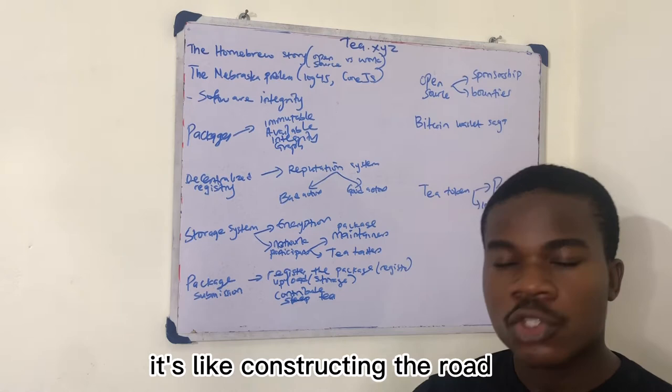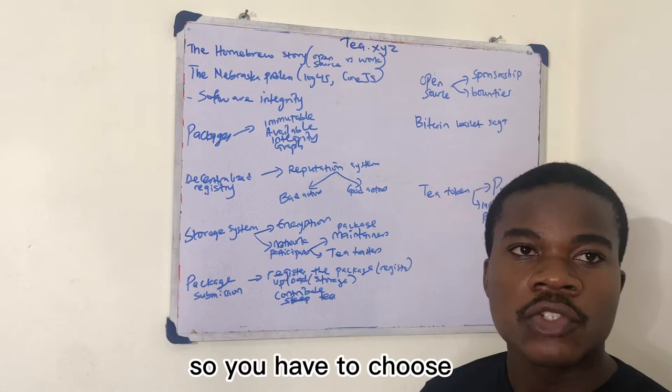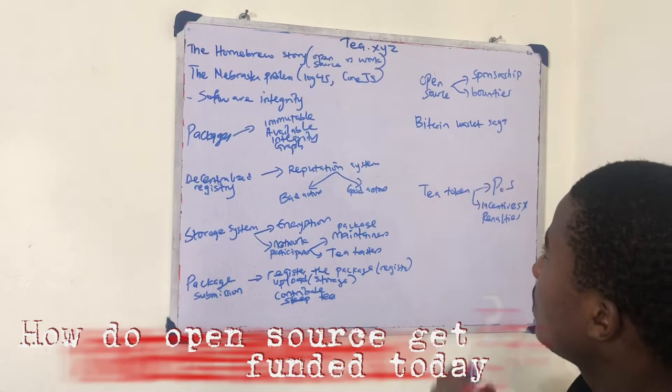Yes, open source is like a public good, it's like constructing the road. But how does the road come back is another thing. So he had to choose, that is a very big problem. So how does open source get funded today?